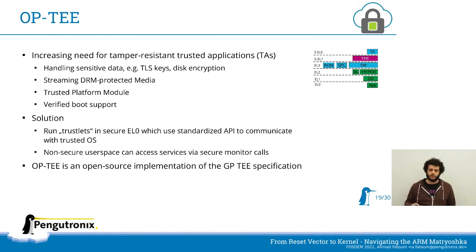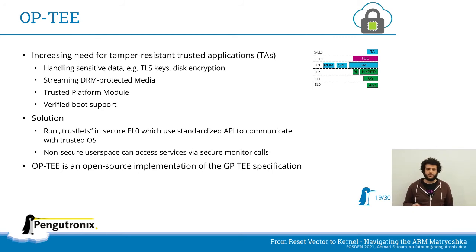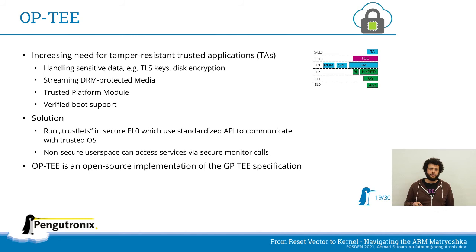Looking at the exception levels: we start in EL3, then have secure EL1 for OP-TEE, secure EL0 for trusted applications, EL2 for the hypervisor, EL1 for the OS, and EL0 for applications. The x-axis represents time.